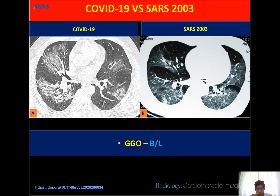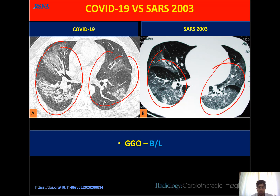COVID-19 has a similar appearance to SARS 2003 — the virus is similar and the imaging findings are comparable, with bilateral ground glass opacities seen in both. To summarize the findings of COVID-19: peripheral involvement, lower zone predominance, ground glass opacity predominantly, consolidation also seen, and rarely nodular or nodular with central necrosis. No pleural effusion, no pericardial effusion, no mediastinal lymphadenopathy, and no sub-pleural sparing.